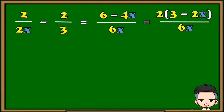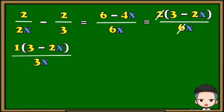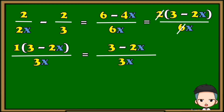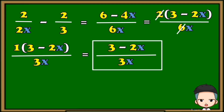Now we can simplify 2 over 6. The simplified form of 2 over 6 is 1 over 3. Then we're just going to copy the rest. All we have to do is write the answer in its simplest form. And the simplest form is 3 minus 2x all over 3x. As you can see, we removed the 1 and the parenthesis, since 1 multiplied by the quantity of 3 minus 2x is equivalent to 3 minus 2x. Our final answer: 3 minus 2x all over 3x.